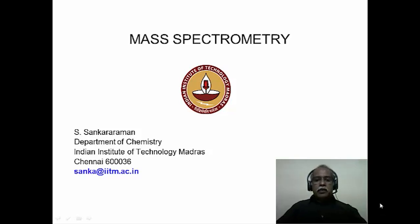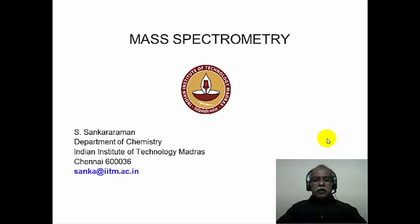Hello, welcome to the course on application of spectroscopic methods in molecular structure determination. We are in module 16 now, and with this module onwards for another three modules, we will discuss mass spectrometry. Mass spectrometry is a very powerful and sensitive technique, widely used in the molecular structure determination of organic, inorganic, and organometallic compounds. It is not only used in chemistry; it is widely applied in forensic sciences and biological sciences.